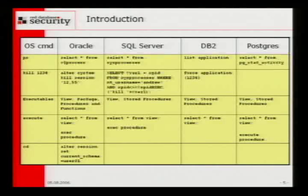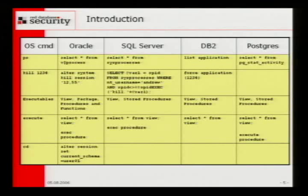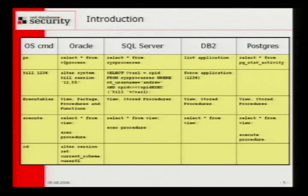To prove my assumption, I made a chart so you can see the PS command in the operating system world. It's a select star from V$process in Oracle, or select star from sys processes in SQL Server. In the database, you can kill database jobs or processes with the alter system command. You have executables like views, packages, procedures, and functions. In Oracle, you can switch into different schemas with alter session set current schema equal and then the name of the schema.